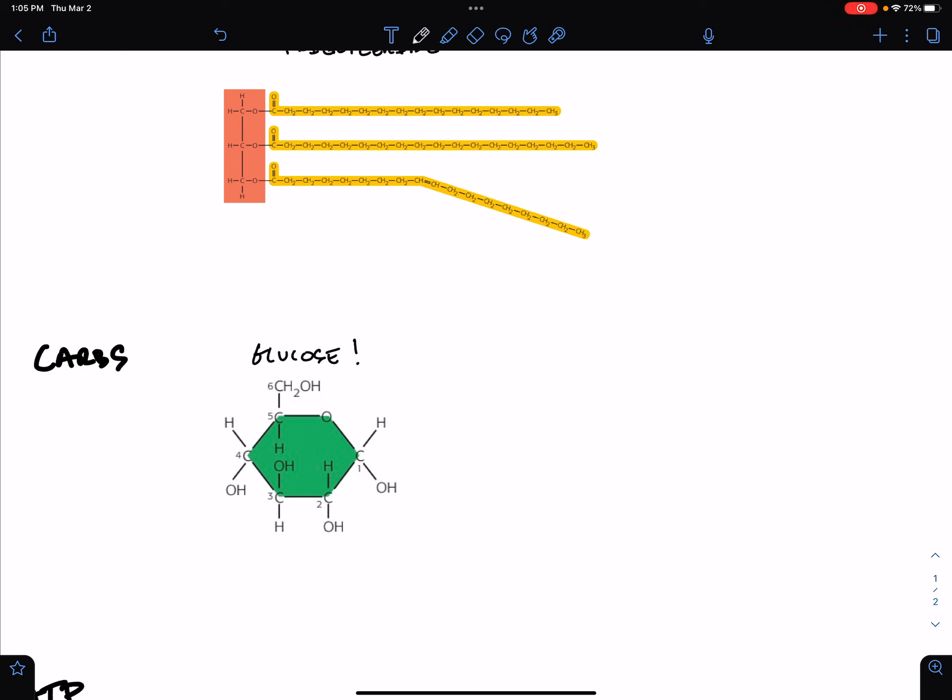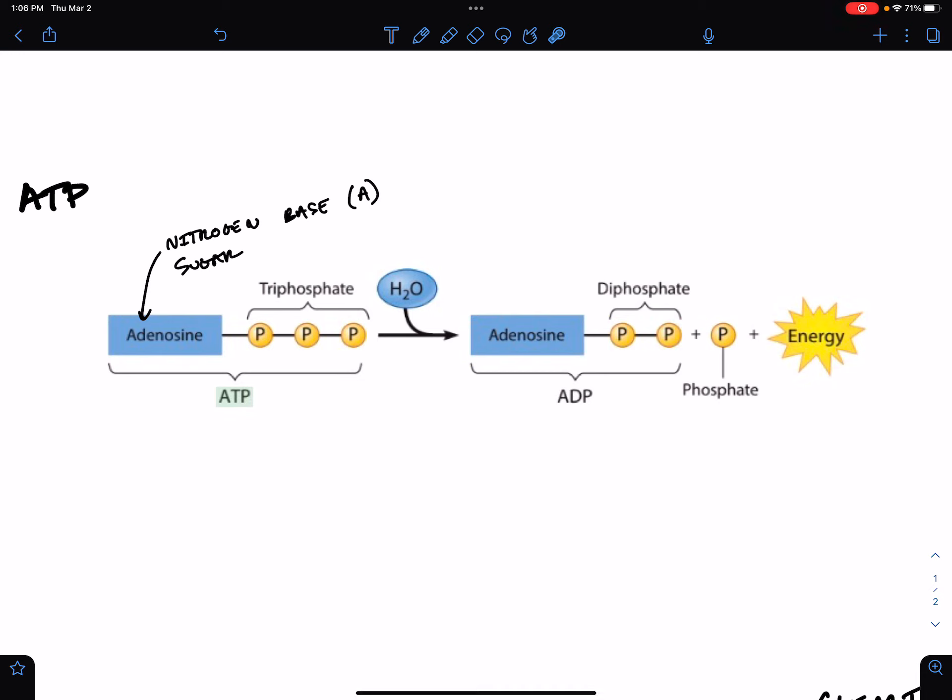Usually when we burn ATP, what we're doing is breaking off the last phosphate group from the triphosphate system. That breaking and then attaching this phosphate to another molecule releases energy, and it's just the right amount of energy to do cellular work. If you imagine making an analogy between lipids, carbs, and ATP...